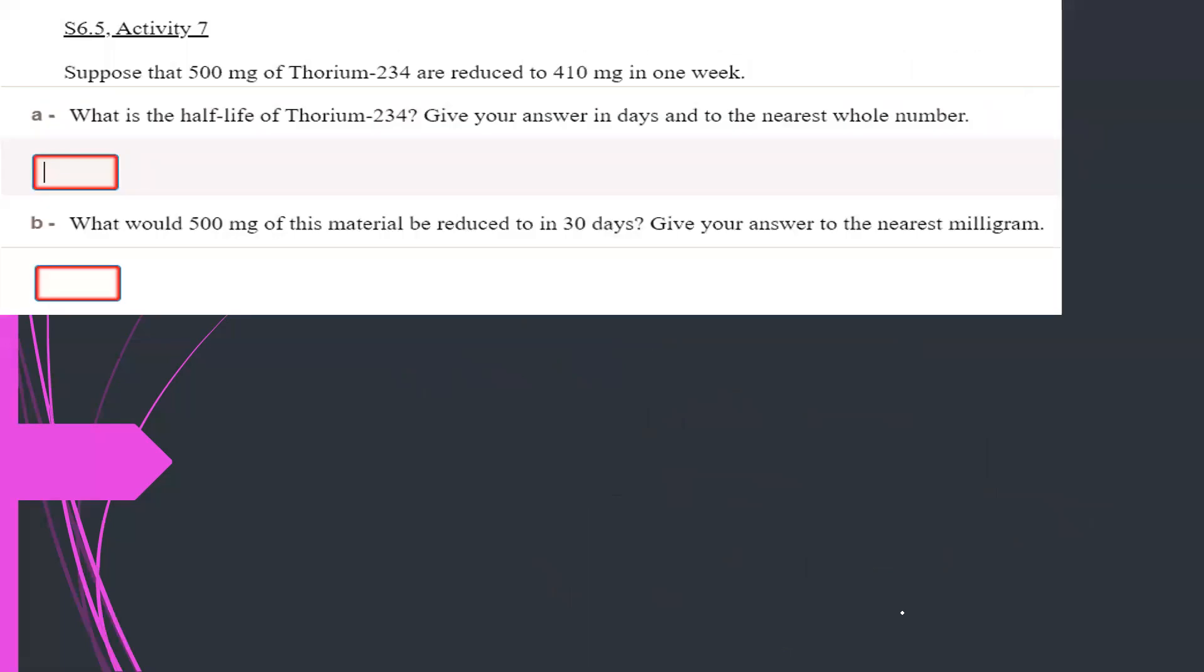Last question I have today. Suppose that 500 milligrams of thorium-234 are reduced to 410 grams in one week. I have the initial amount, and I have a recent amount, and I have the time it takes. One week, seven days. So, write the formula, Q(t) is equal to Q naught e to the negative rt. Always the initial amount is bigger than the recent amount. The recent amount is 410 equals 500 times e to the negative r times 7.